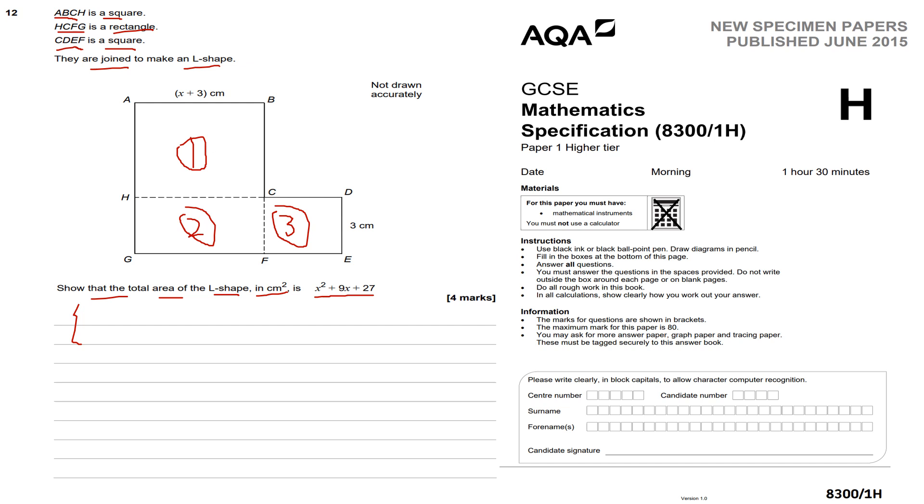We can use FOIL, the grid method, or the box method - either way. We do x times x, which is x squared. X times positive 3 makes positive 3x. Three times x makes 3x. And then 3 times 3 makes 9.